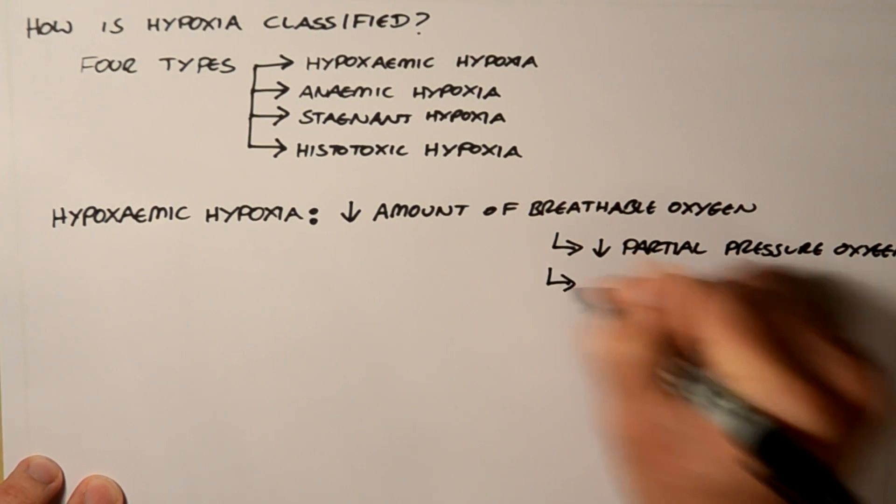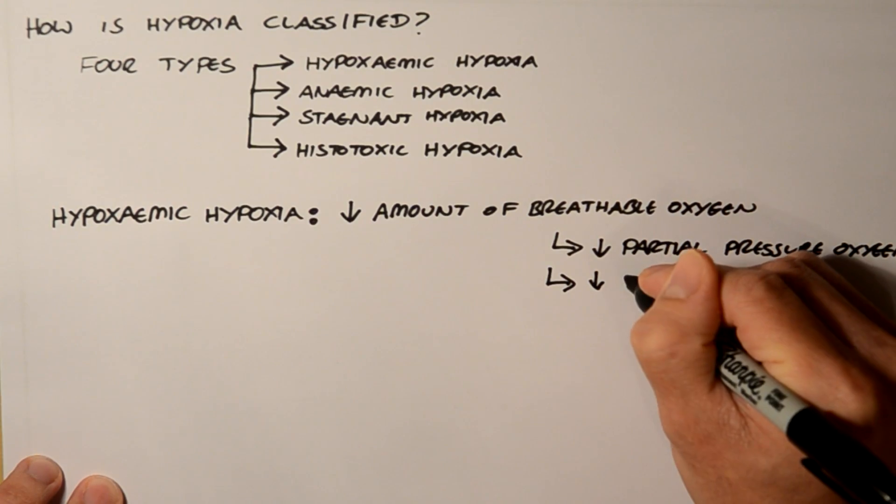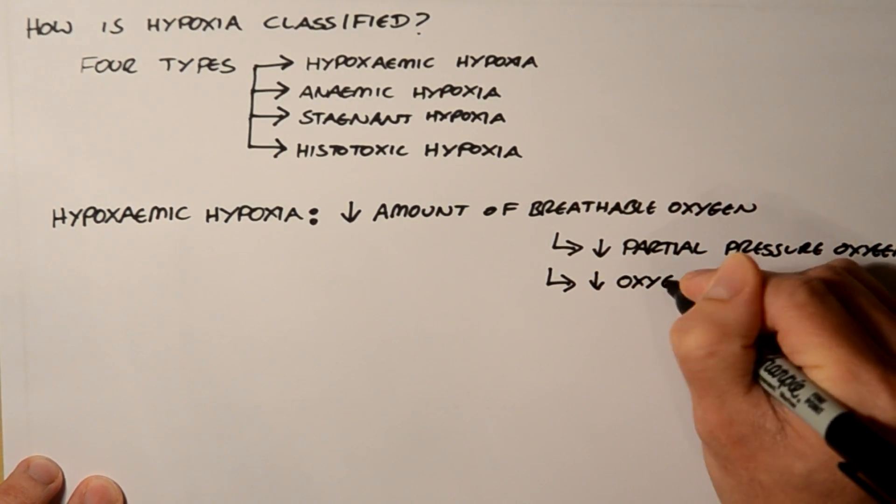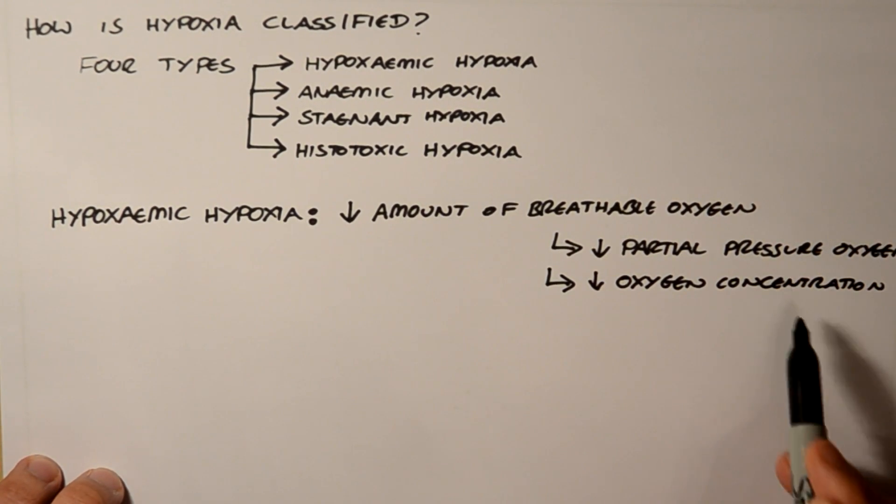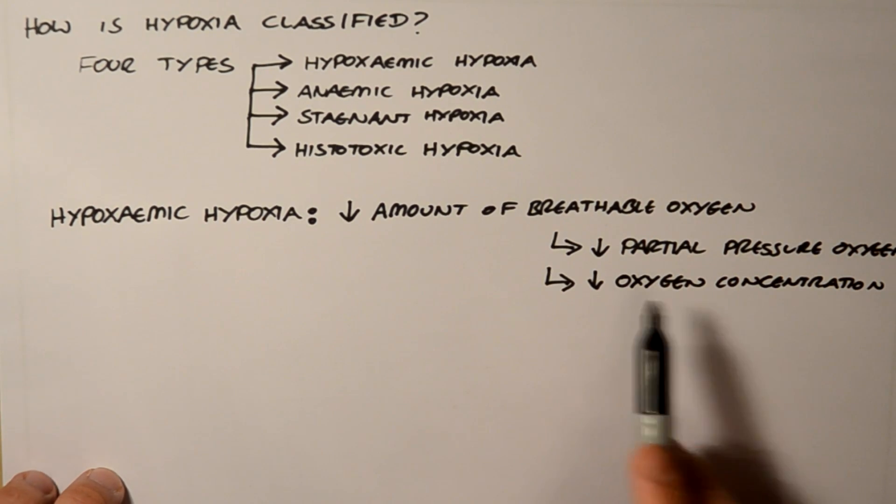And the second one is a decrease in the oxygen concentration. So, have you thought of some ways where this could happen? Firstly, if we look at the partial pressure.